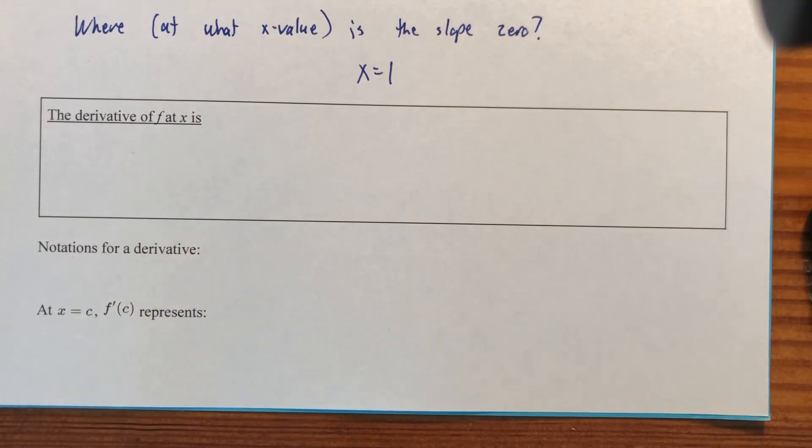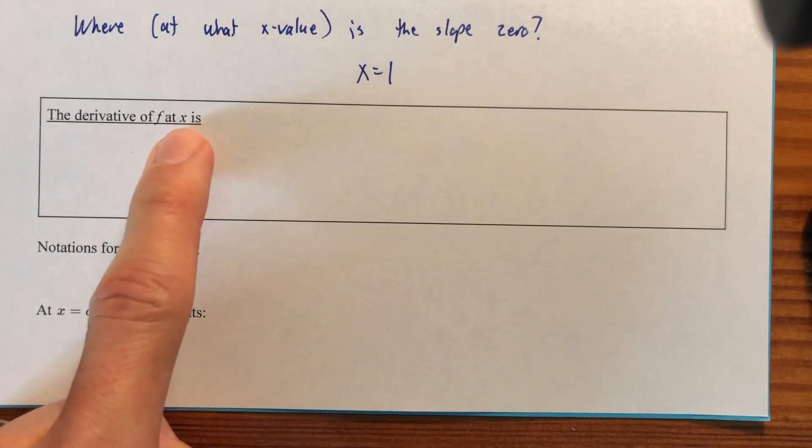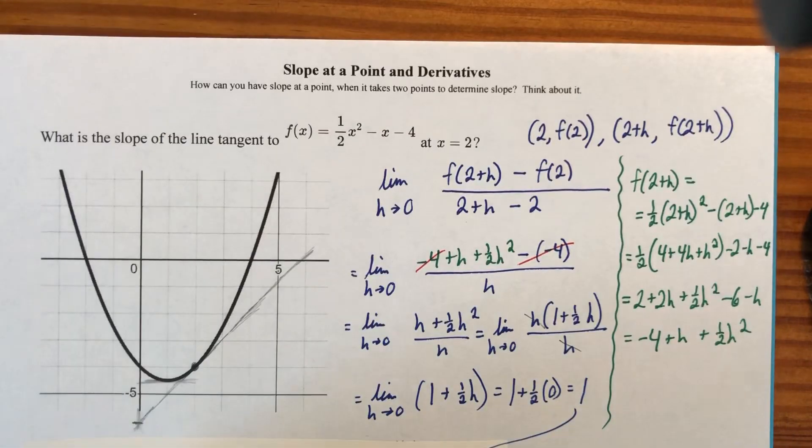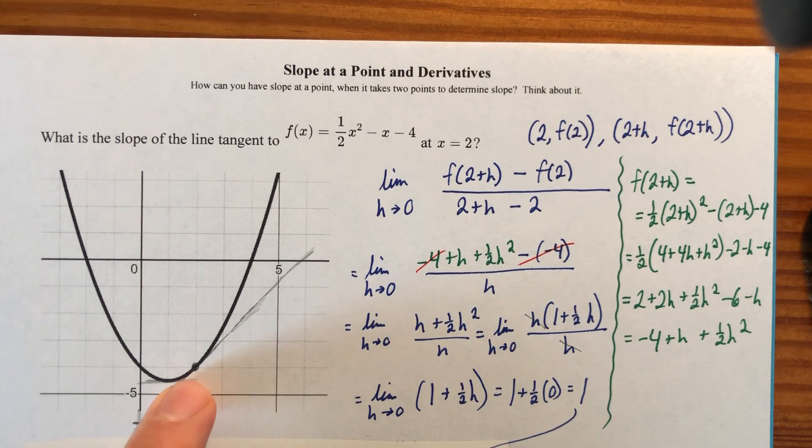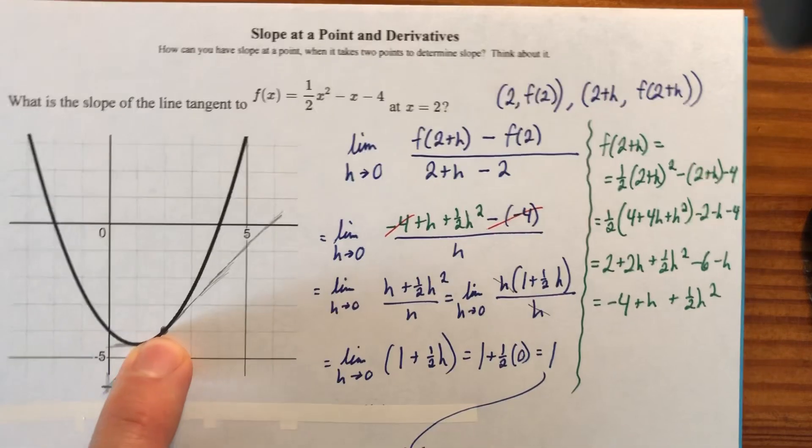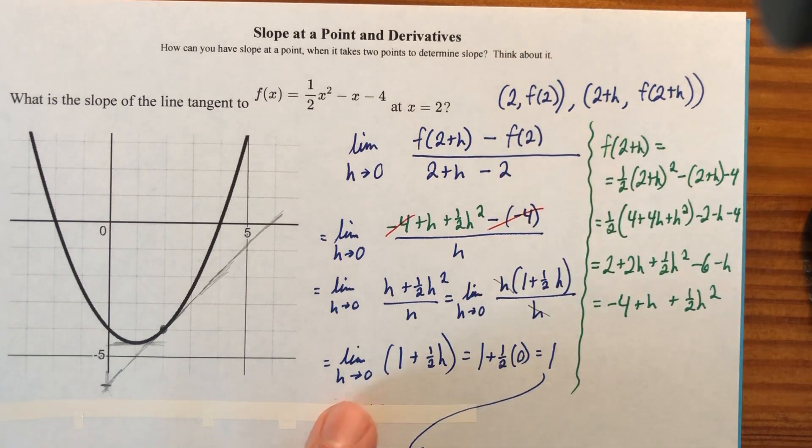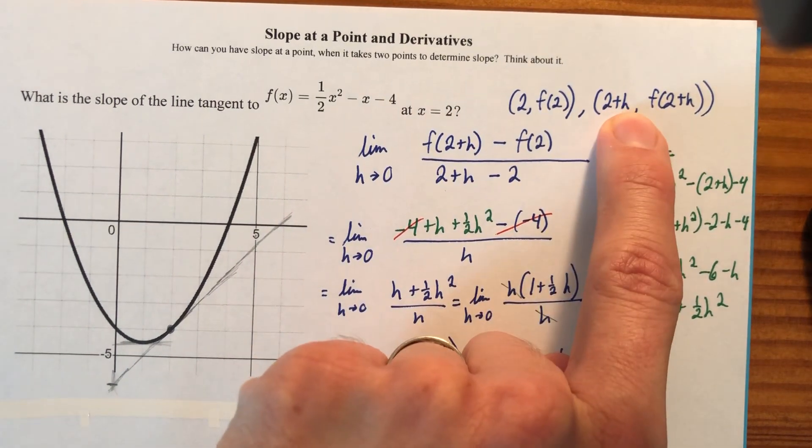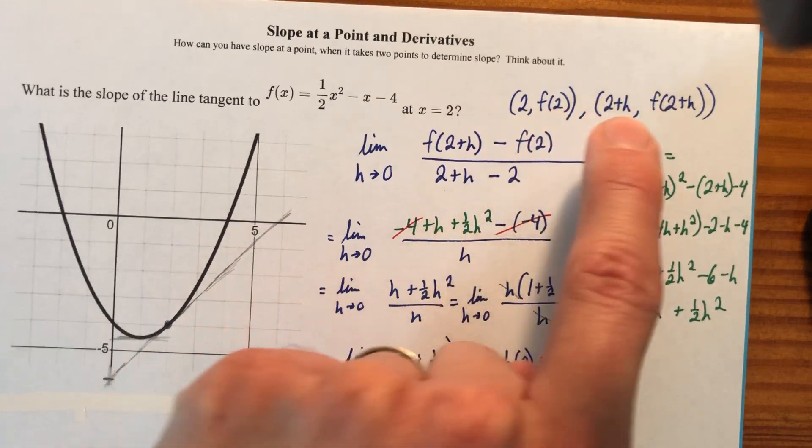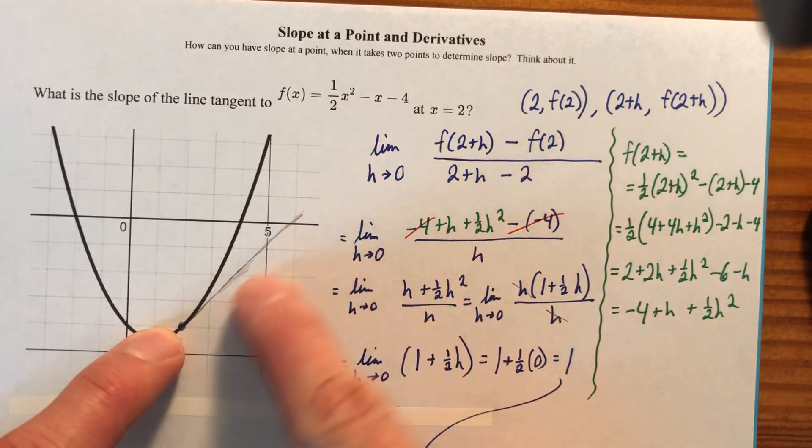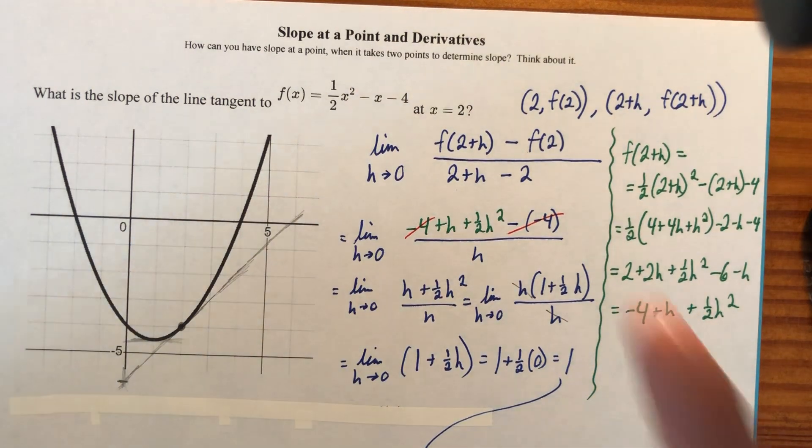Let's talk about what the derivative of f at some x value is, and we actually just found the slope at a point by squeezing two points ridiculously, infinitely close together. Basically, h approached zero. We had two, and then just a little bit more than two, and then we just squeezed them together until we could find the slope. And so instead of using the number